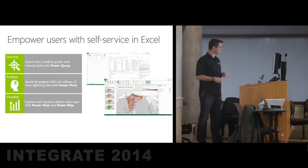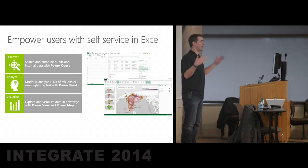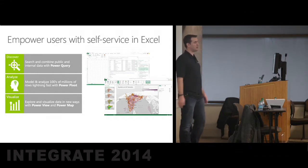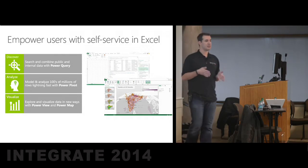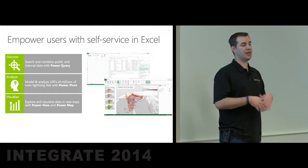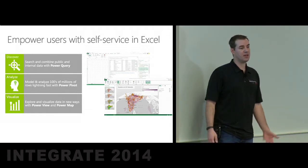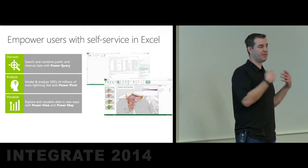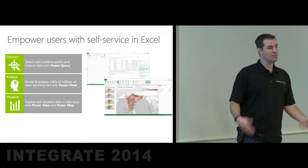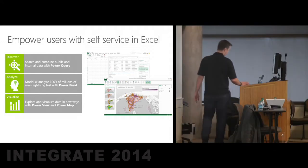Let's dive a bit into self-service in Excel. The same three pillars, now a little more fleshed out. We can discover, search, and combine public and internal data using Power Query. You can model and analyze hundreds of millions of rows of data right there in Excel on your desktop — we install an in-memory column-store index inside Excel when you install Power Pivot, which compresses data 10x to 15x, so you can have hundreds of millions of rows without too much memory pressure, and it's blazing fast. The last piece is visualizing that data using Power View and Power Maps. That's probably enough for slides — let's look at the actual products.